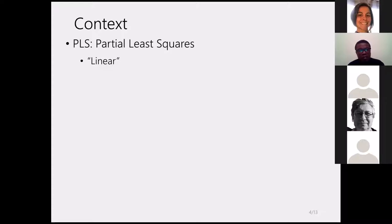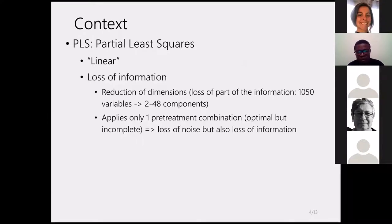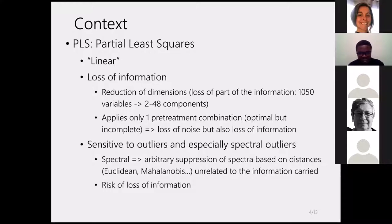PLS is a linear method that acts like PCA. By reducing the dimensionality of components, it reduces information. In PLS, we can only use one pre-treatment combination, which is optimal but causes loss of information. PLS is also more sensitive to outliers, especially spectral ones. Sometimes we suppress outliers and take into account Mahalanobis distance without knowing if this is related to the right information or not — all of which risks loss of information.